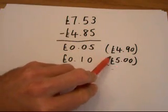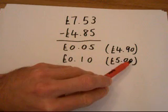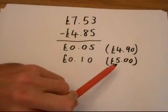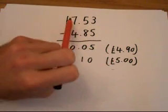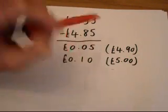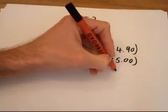Now I'm going to go back over here and I'm going to think, right, what can I add on to £5 now? My target number is £7.53, that's what I'm trying to count up to. So what can I add on to £5 to get up here? I'm going to go up to £7 and I'm going to put £7 here.